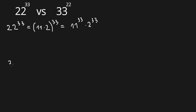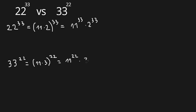Let's look at the second number: 33 to the power of 22. It can be written as 11 times 3, all raised to the power of 22. That gives us 11 to the power of 22, times 3 to the power of 22.